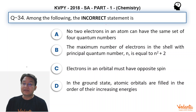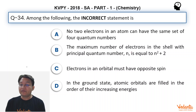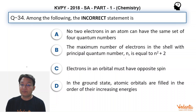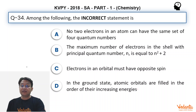Among the following, the incorrect statement is: (A) No two electrons in an atom can have the same set of four quantum numbers. (B) The maximum number of electrons in the shell with principal quantum number n is equal to n² + 2. (C) Electrons in an orbital must have opposite spin, and (D) in the ground state, atomic orbitals are filled in order of increasing energies.